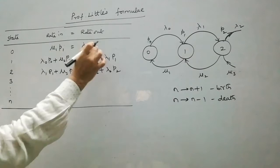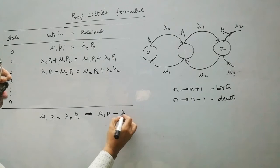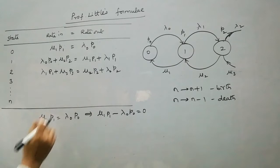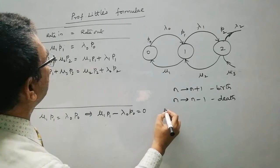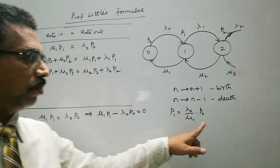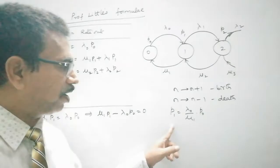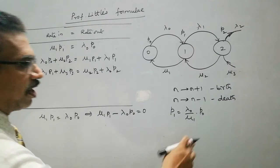Let us take the first equation: μ₁P₁ = λ₀P₀, which implies μ₁P₁ - λ₀P₀ = 0. From this we can get P₁ in terms of λ and μ: P₁ = (λ₀/μ₁) × P₀. P₀ is very important because we will express all probabilities — that is, probabilities of all states — in terms of P₀.